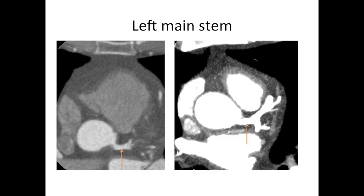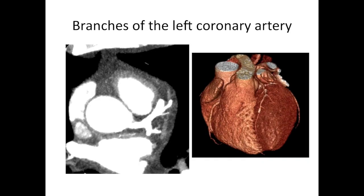Let's start with the left coronary artery. Here we're back to axial images. We've got the aorta here, and the left coronary artery comes out on the left side. The first part of the left coronary artery before any branches is called the left main stem. The left main stem then branches — the first branch is called the left anterior descending artery, which goes down over the front of the heart. Going backwards is the left circumflex artery.